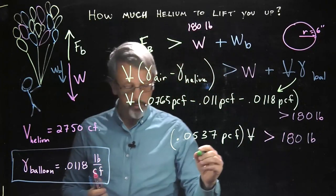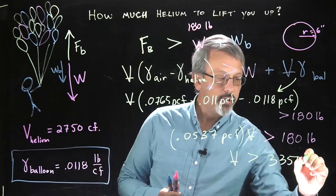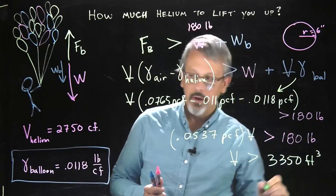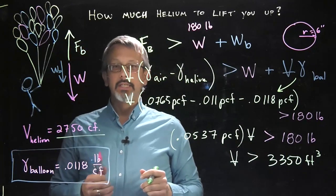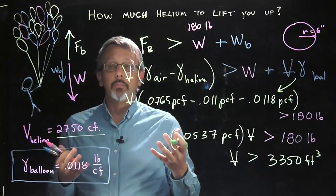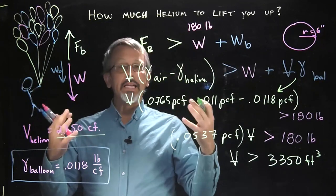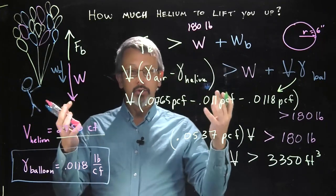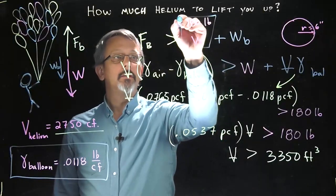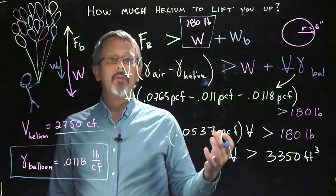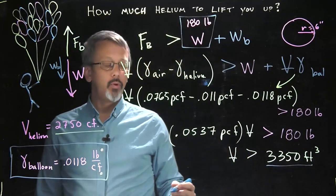And then when we solve for our volume there, we get a volume that must be greater than 3,350 cubic feet. Notice that's about 600 cubic feet more than was necessary just to float the payload, just to float the person who was the payload in this case. We need an additional 600 cubic feet to account for the actual weight of the balloon material, the rubber that the balloons are made of themselves. Note that now that we've solved this problem for one payload or one weight, it's simply a matter of scaling that to solve for any other weight. We can see that there's a relationship now between our volume necessary to lift the weight and the weight itself.